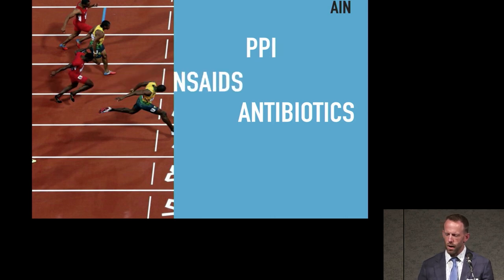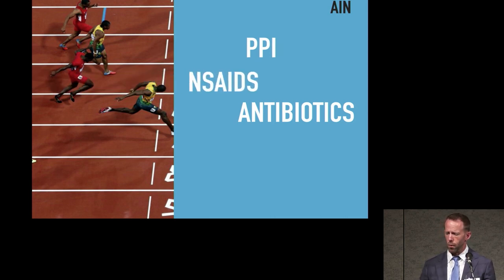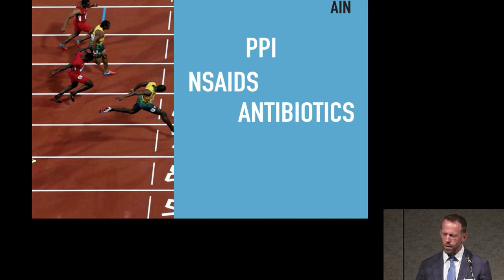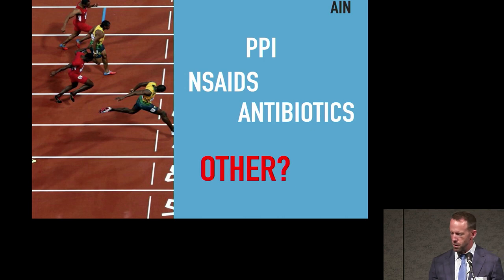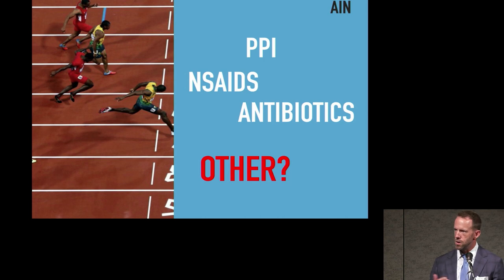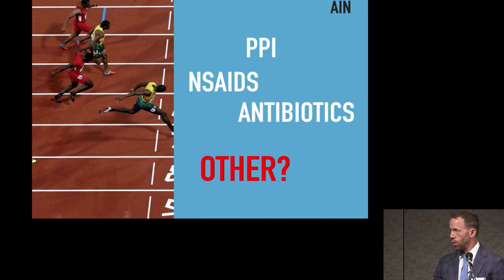Right now antibiotics are in the lead, with PPIs and anti-inflammatories competing for second place. It's hard to know what the next player will be, because these medications come out and you don't really start picking up on interstitial nephritis until the medication has been available for a while.